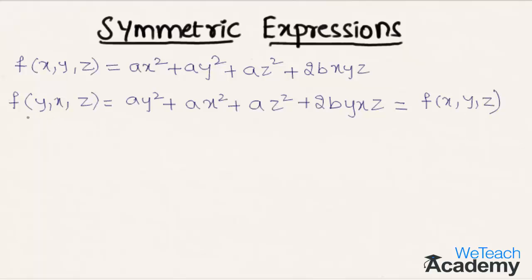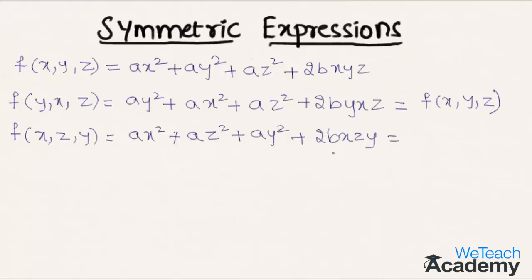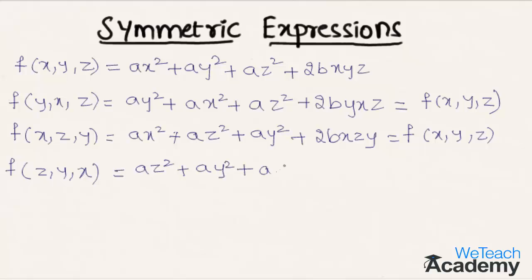Now similarly by replacing y with z and z with y we get f of x, z, y as ax squared plus az squared plus ay squared plus 2bxyz. This expression is also equal to f of x, y, z. Again let us replace x with z and z with x. We get f of z, y, x as az squared plus ay squared plus ax squared plus 2bxyz. This expression is also equal to f of x, y, z.